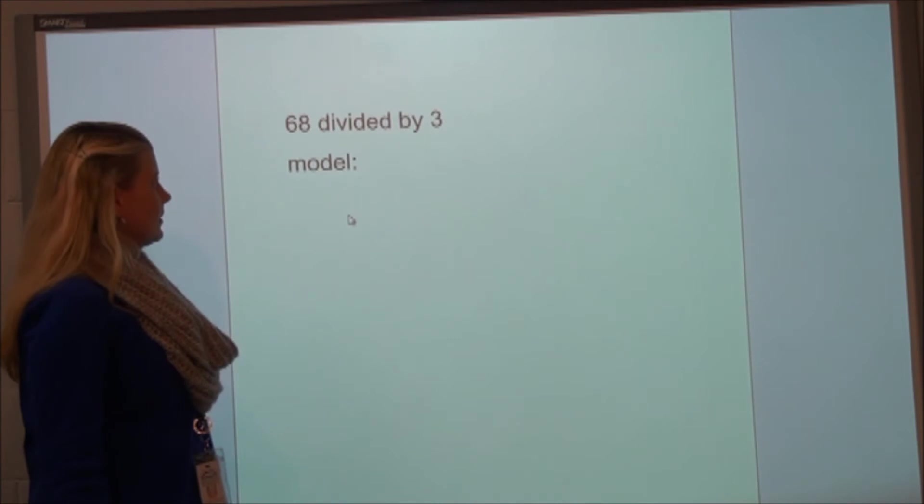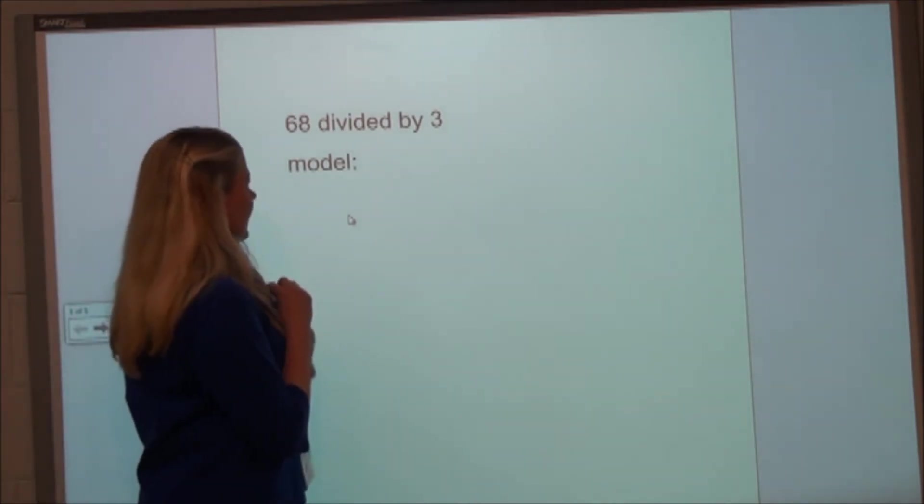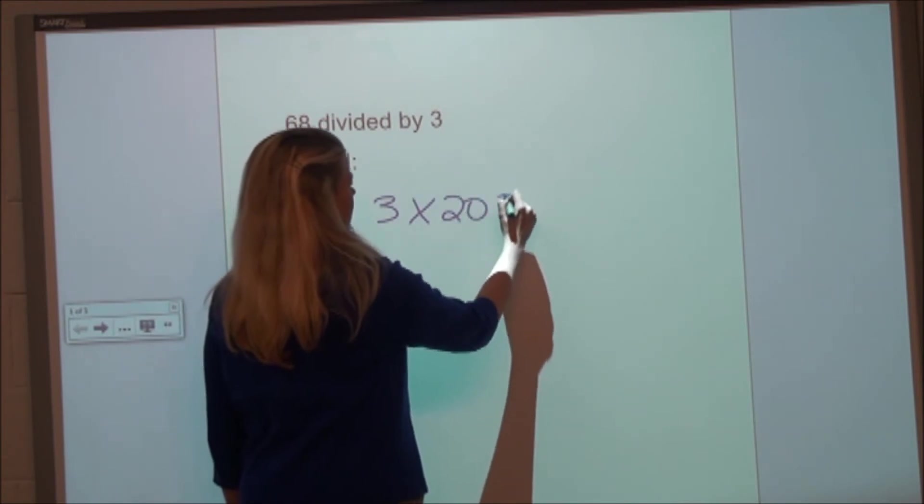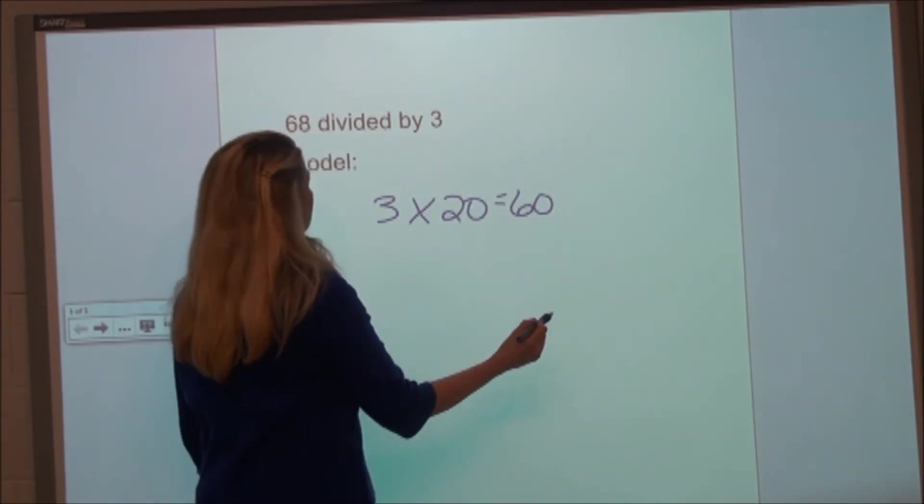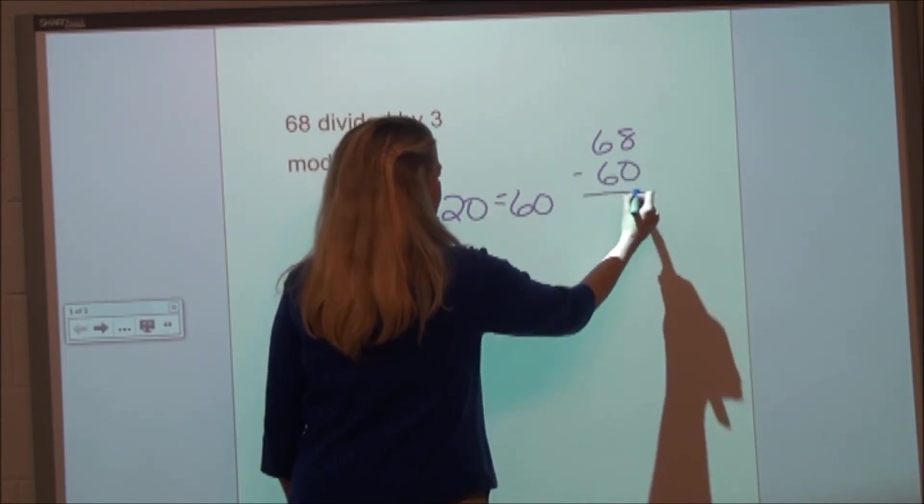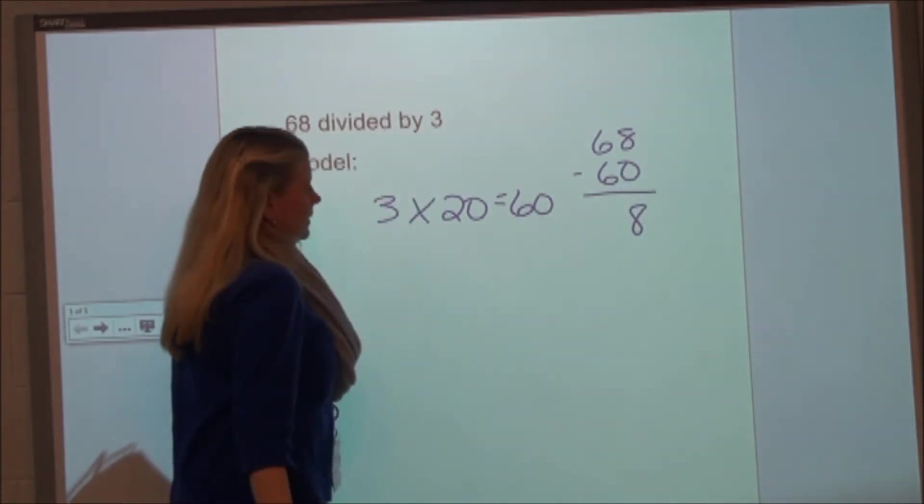Alright, we're going to do 68 divided by 3. I know that 3 times 20 is 60. So I can take that 60 away from my dividend, 68, and 8 left over.